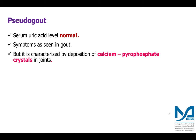Pseudogout is a condition where serum uric acid levels are normal, but symptoms similar to gout are observed. This occurs because of the deposition of calcium pyrophosphate crystals — not monosodium urate crystals — in the joint.